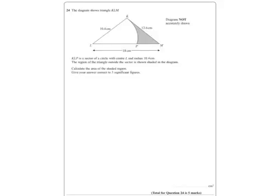We've got a shape here, it's a triangle, and we've got to find the shaded part. So essentially you've got to find the area of the triangle and take away the area of the sector of the circle there.